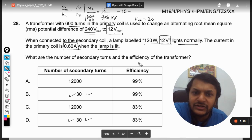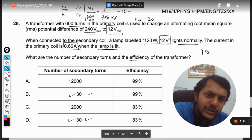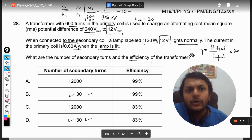So the primary current is also given to us. Now we want to find what are the number of secondary turns and the efficiency of the transformer. So we know that efficiency is defined as power output divided by power input into 100.